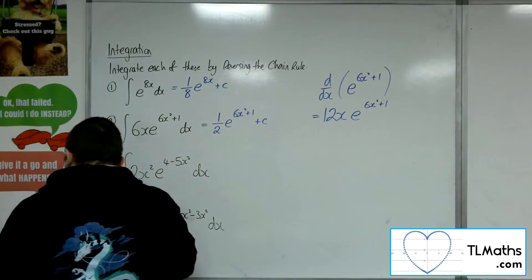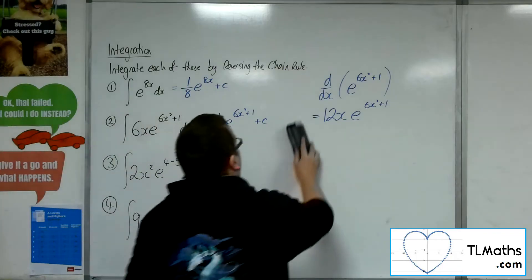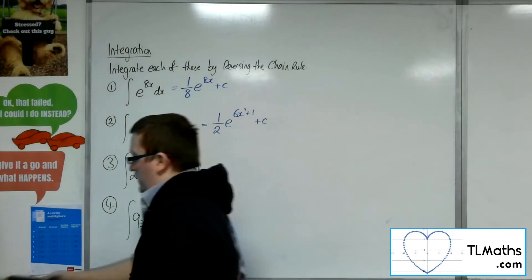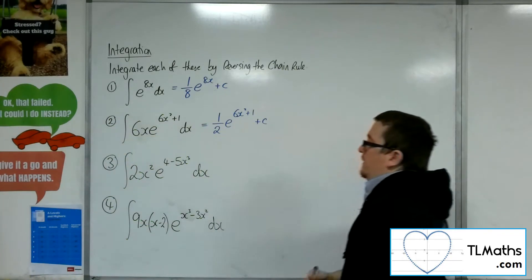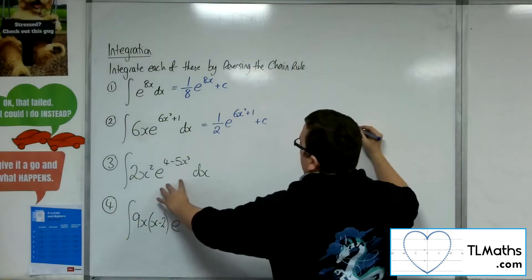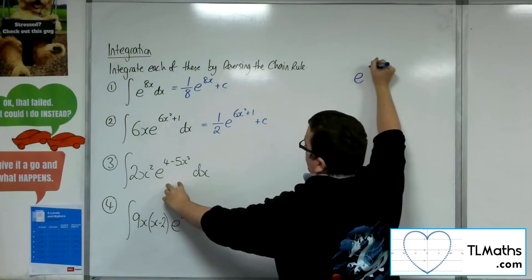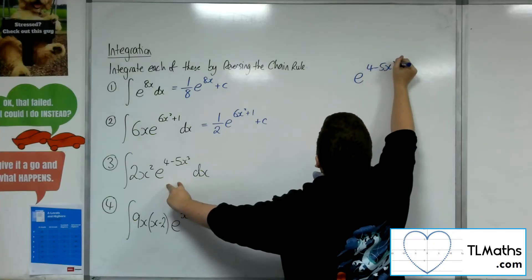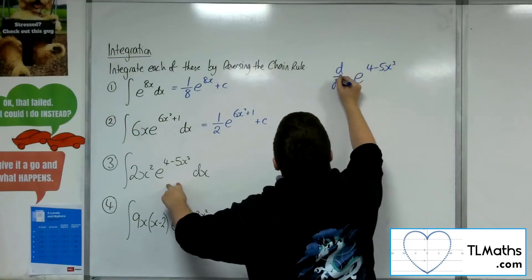Let's have a look at number three. So number three, the integral of 2x squared e to the 4 minus 5x cubed. So let's just look at that e to the 4 minus 5x cubed and differentiate that.